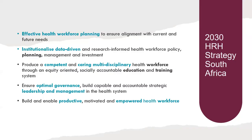In South Africa, we were not starting from scratch. We had long been planning how to manage the health workforce more efficiently. This process began with aligning the human resources information system to the National Department of Health Human Resources Strategy, summarized in five areas: effective workforce planning for current and future needs, institutionalized data-driven policies for planning, a competent and multidisciplinary health workforce, optimal governance in leadership and management, and building a productive and empowered workforce.